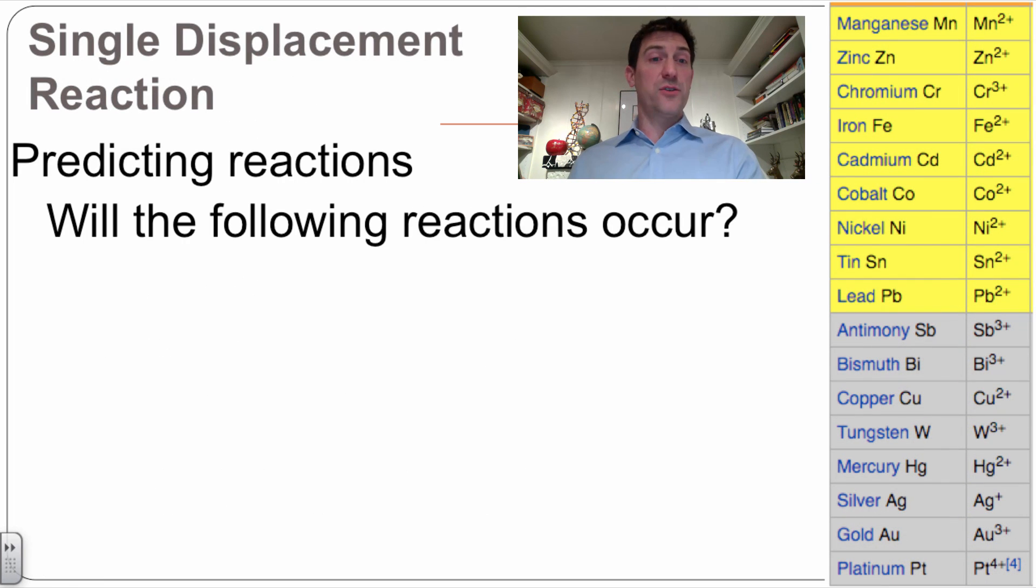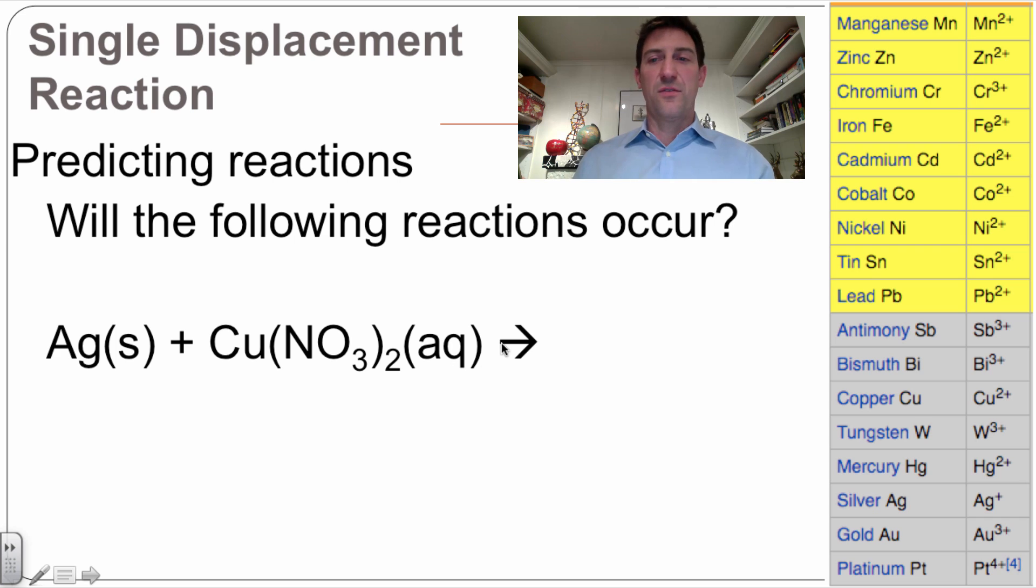So will the following reactions occur? We've got silver and we've got copper nitrate. What we're trying to find out is, will this silver come over here and break this copper off? The reason I need to do that, silver makes a positive ion.